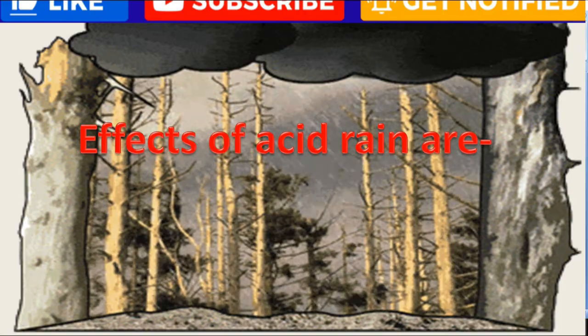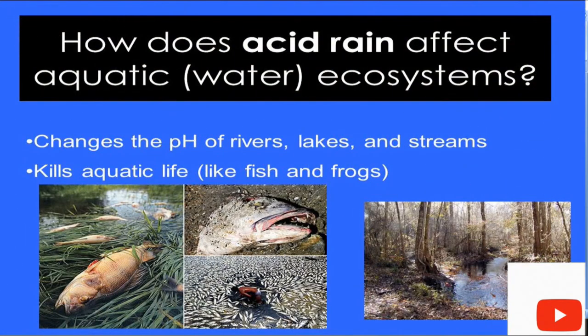Effects of acid rain on the environment. Acid rain affects aquatic ecosystems or water ecosystems, changes the pH of rivers, lakes, and streams, and kills aquatic life like fish and frogs.